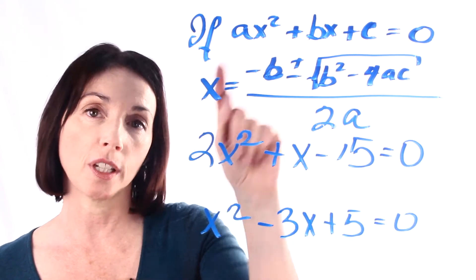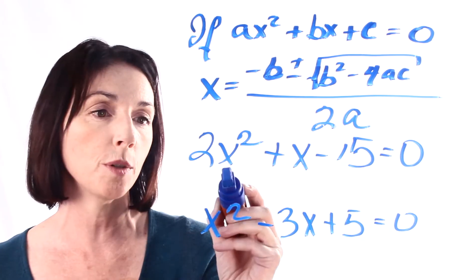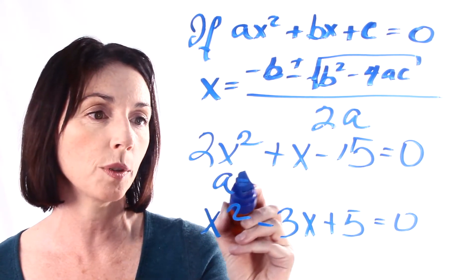a is always the coefficient of the x squared term. So in this case, the coefficient of our x squared term is 2. So a equals 2.